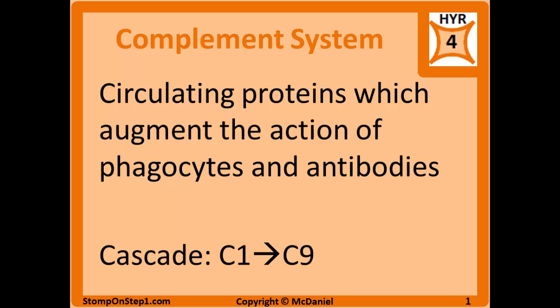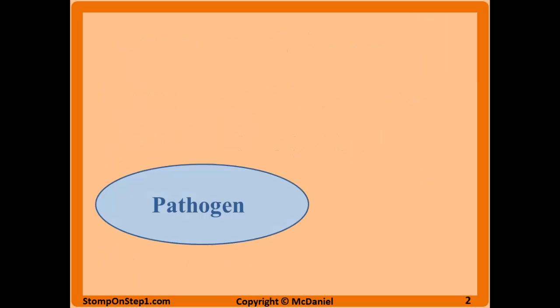The classic picture of this system involves C1 being activated first, and then active C1 goes on to activate C2 and so on until you get through C9. However, there are other mechanisms where you can start in the middle of this process and not necessarily start with C1, but it's not super important to memorize all the different ways this cascade can be triggered. What's really important for Step 1 is the end products of the complement cascade and how it causes the end results.